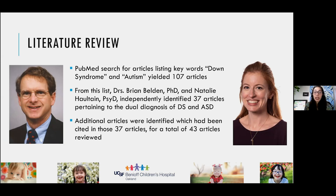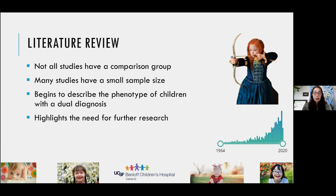The information I will present today comes from two sources. One is a literature review done by Dr. Brian Belden, PhD, and Dr. Natalie Holtain, a doctor of psychology from Mercy Children's in Kansas City. They reviewed a number of articles after performing a PubMed search using keywords Down syndrome and autism. Some things to know: not all studies have a comparison group, many have small sample sizes, but they do begin to describe the phenotype of children with Down syndrome and autism while highlighting the need for further research.